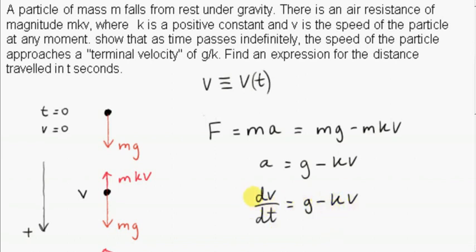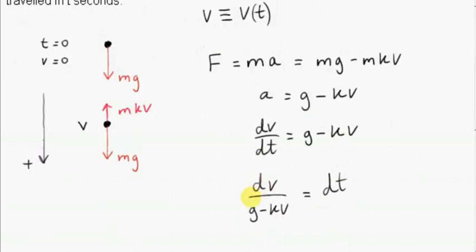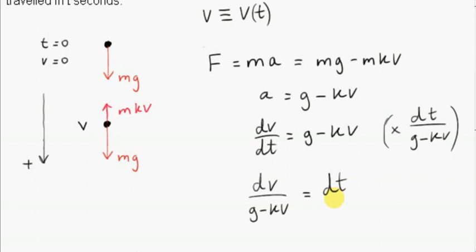We can separate the variables: divide both sides by g minus kv and multiply both sides by dt. This separates all v's to one side and all t's to the other. Remember, g is a constant and k is a constant. Next, we integrate both sides. We are looking for v as a function of t.